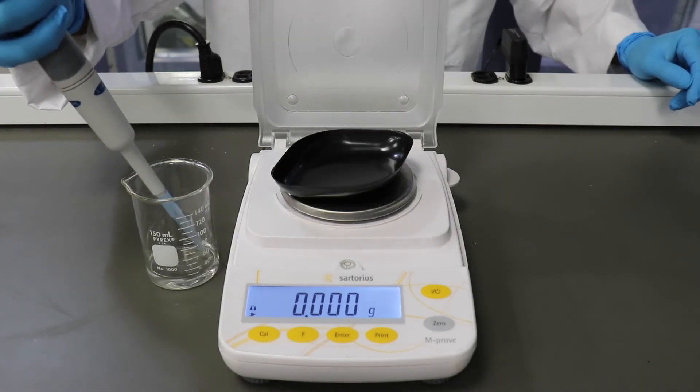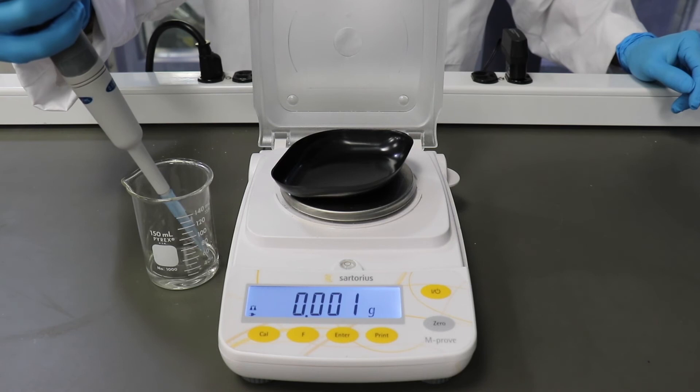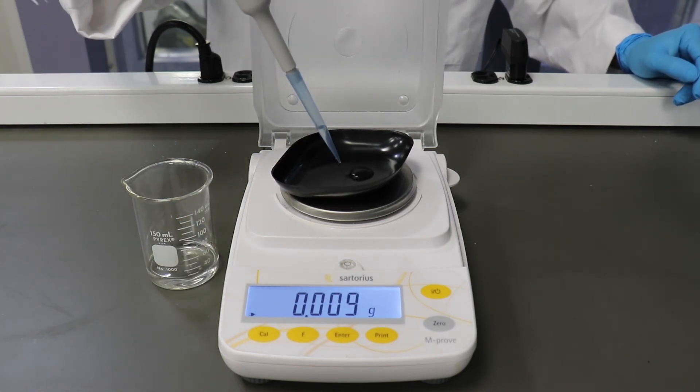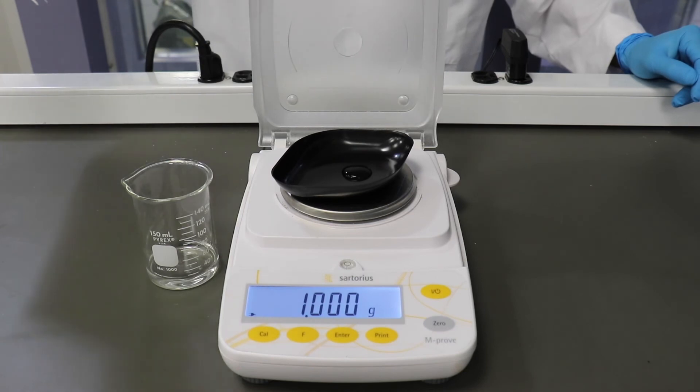If the readout still doesn't come close to what it should, simply repeat the previous steps until the volume of liquid closely matches the value on the balance.